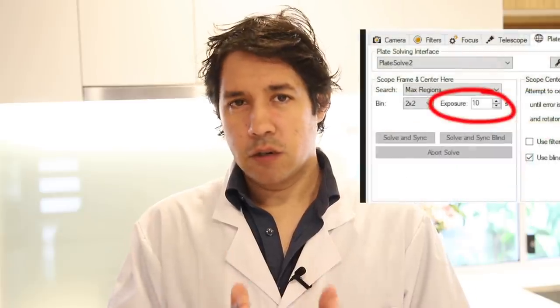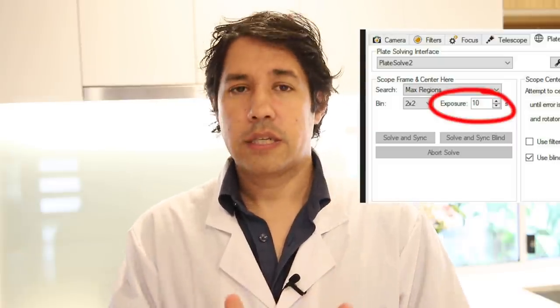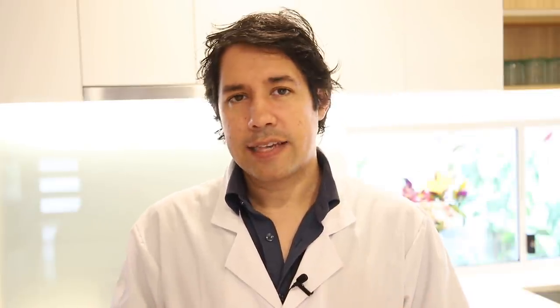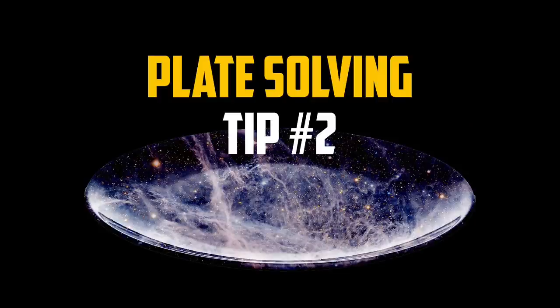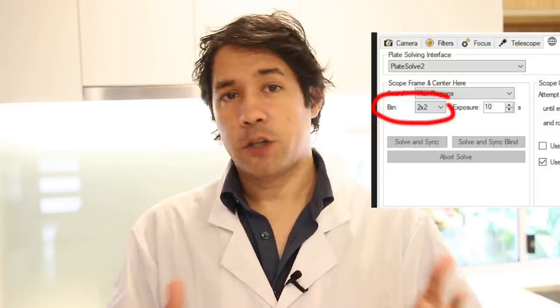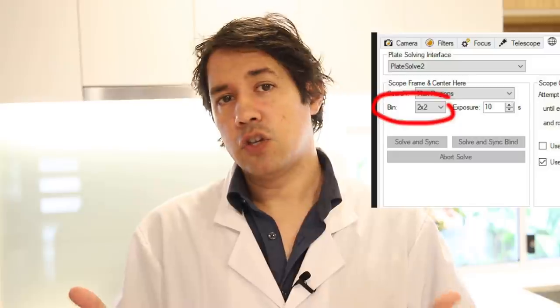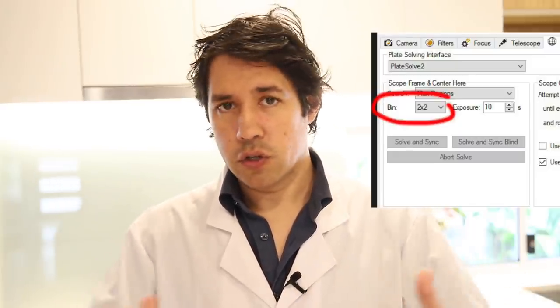Make sure that the plate solving exposure or the test exposure that it's using to find its coordinates is long enough that you collect a lot of stars. The more stars you get, the more reference points it has to be able to make that determination. Use binning to artificially boost the signal of the stars. With binning you can reveal stuff of faint magnitudes without a longer exposure. And you don't need the resolution for plate solving. We're just trying to find coordinates here.